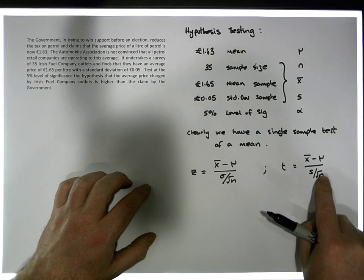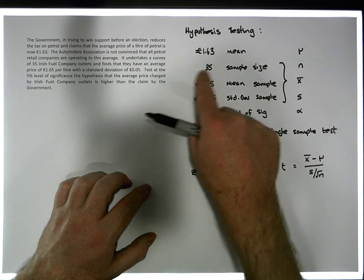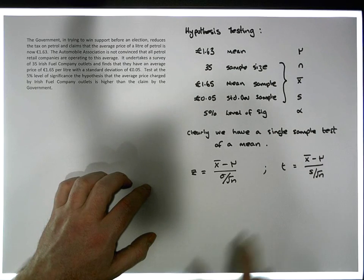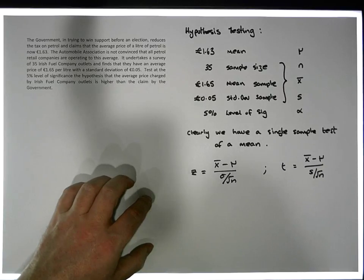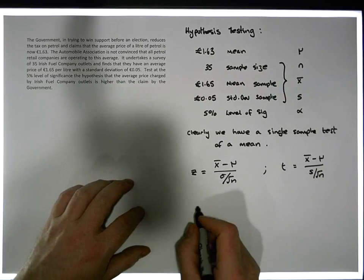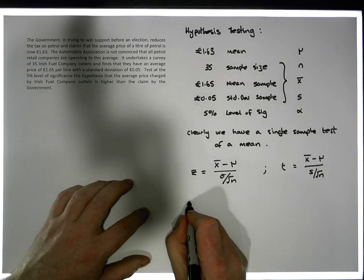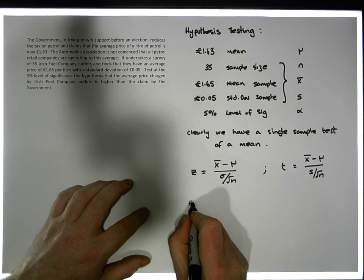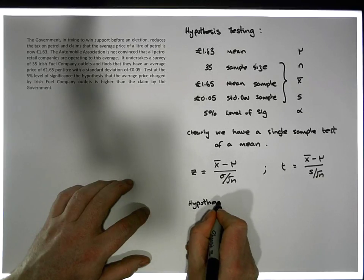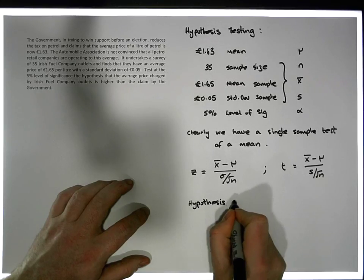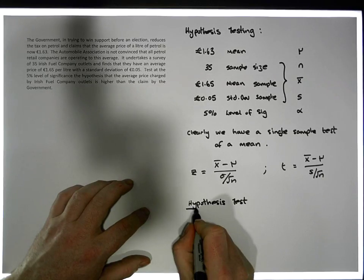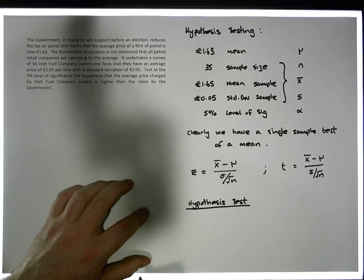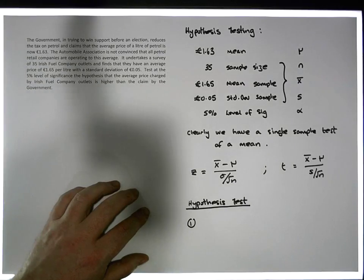We have s and n, the sample size, so we can actually construct this test statistic. Let's start off with the hypothesis itself — step one. Our hypothesis test has five stages.